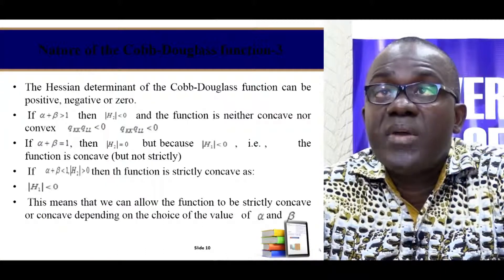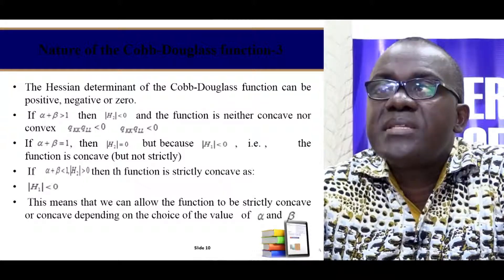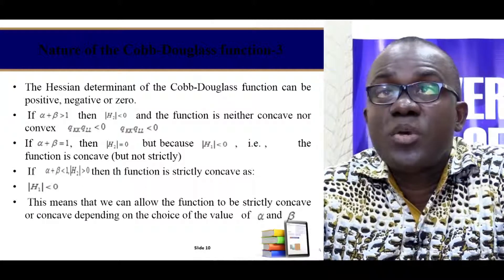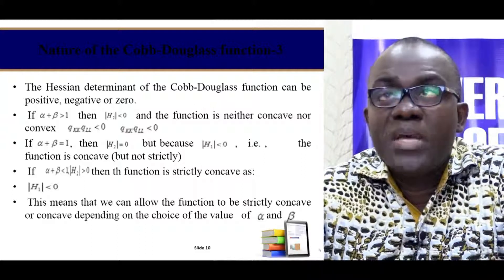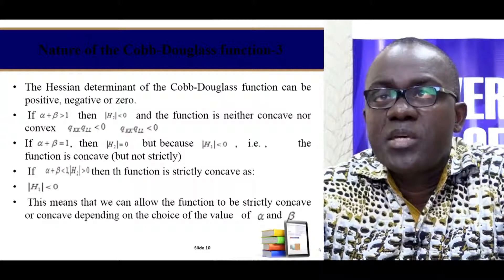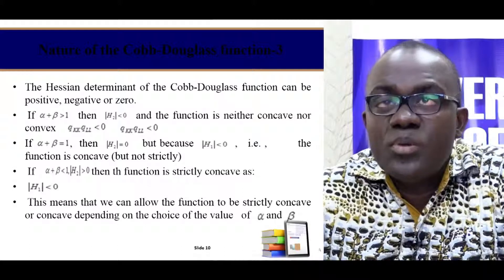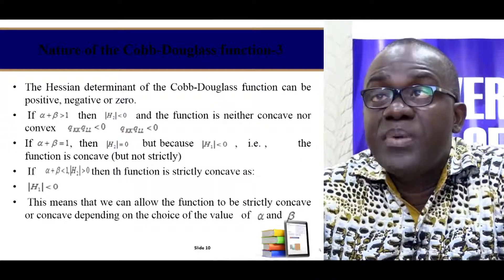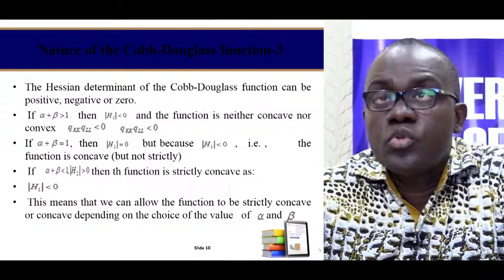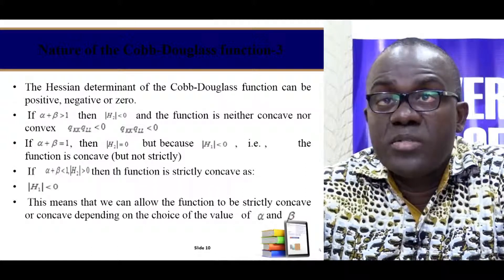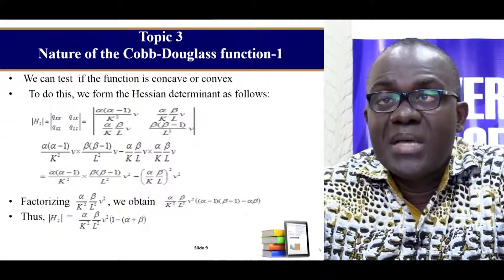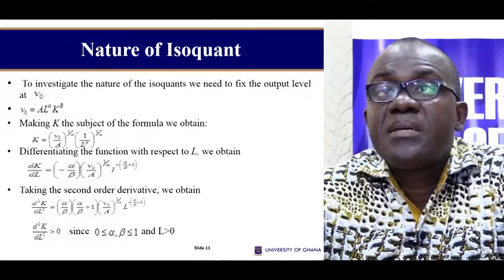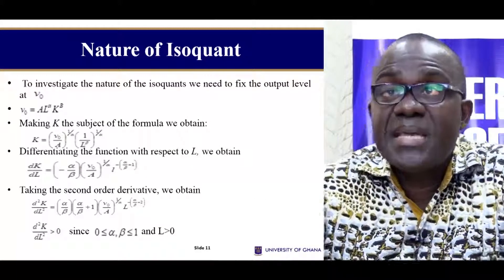These are the conditions under which you will get a Cobb-Douglas function that is concave or convex. Once you determine the values of alpha and beta, it will always help you know the concavity or convexity of the function once this equation has been evaluated.